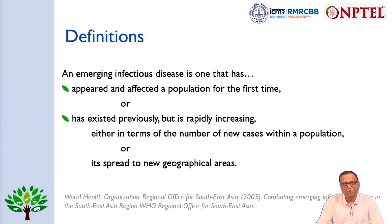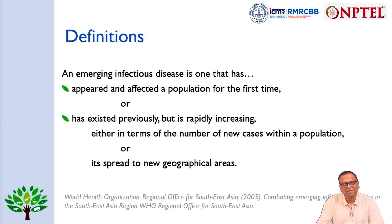Let us first start with a few definitions. An emerging infectious disease is one that has appeared and affected a population for the first time, or it has existed previously but is rapidly increasing either in terms of the number of new cases within a population or in its spread to new geographical areas.